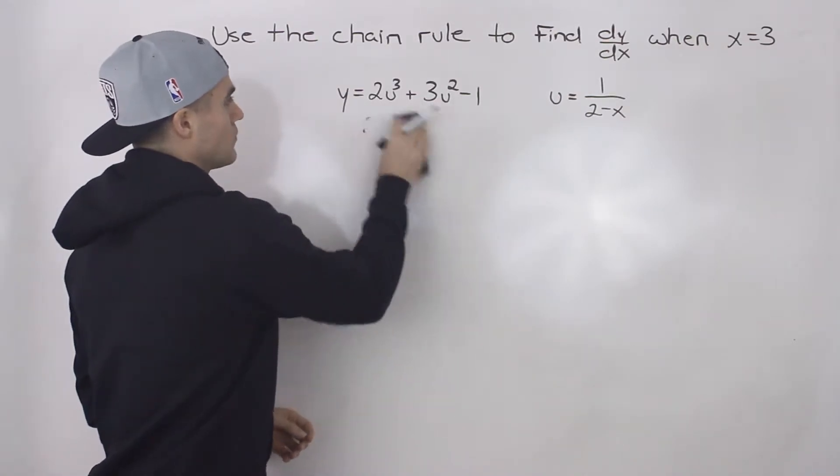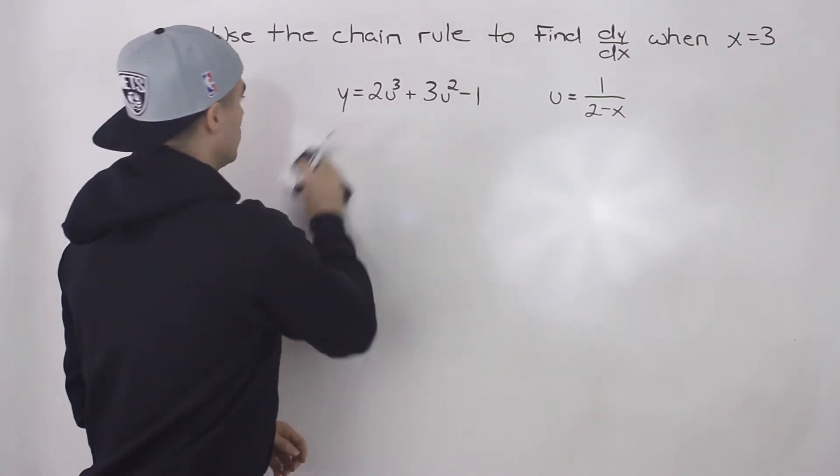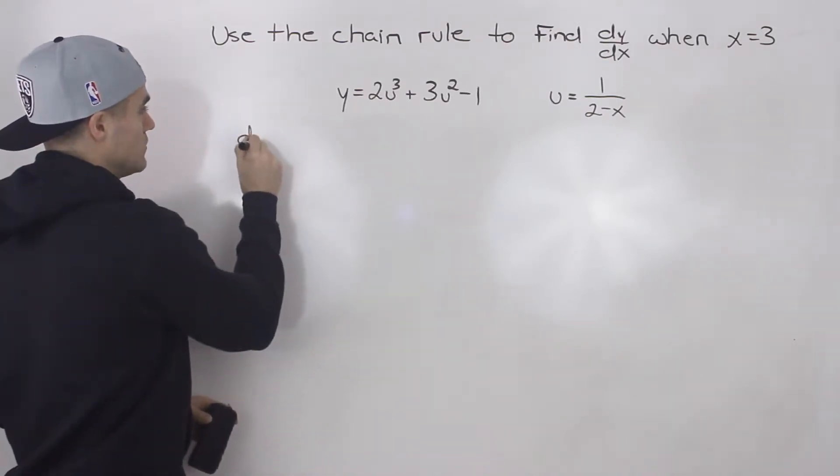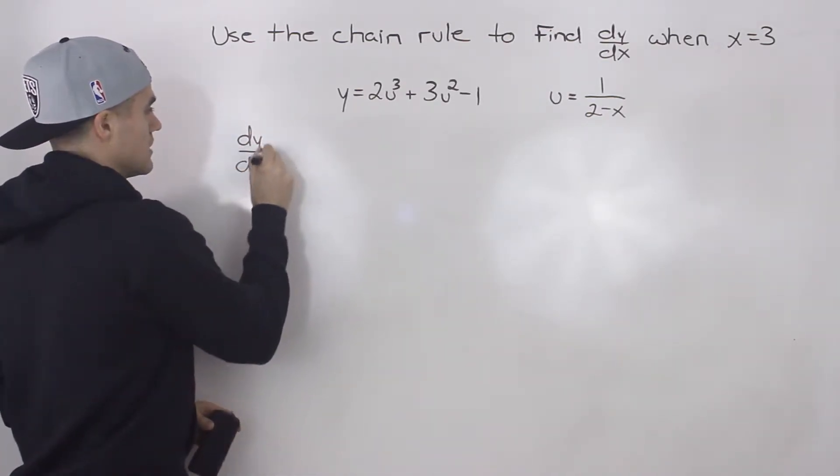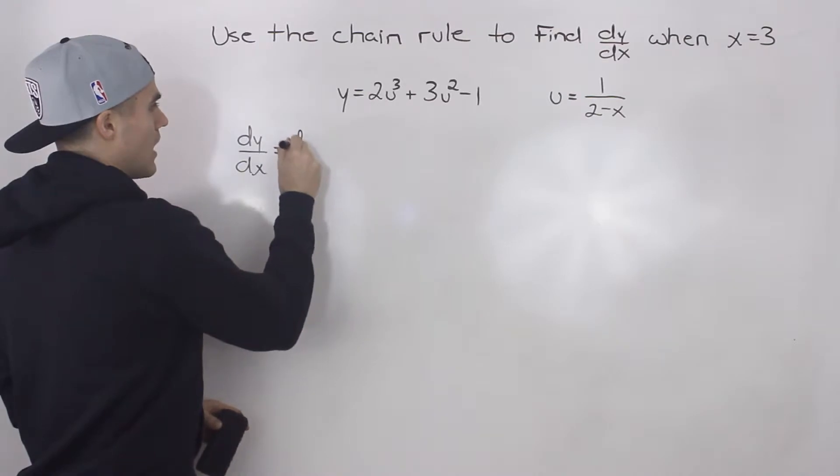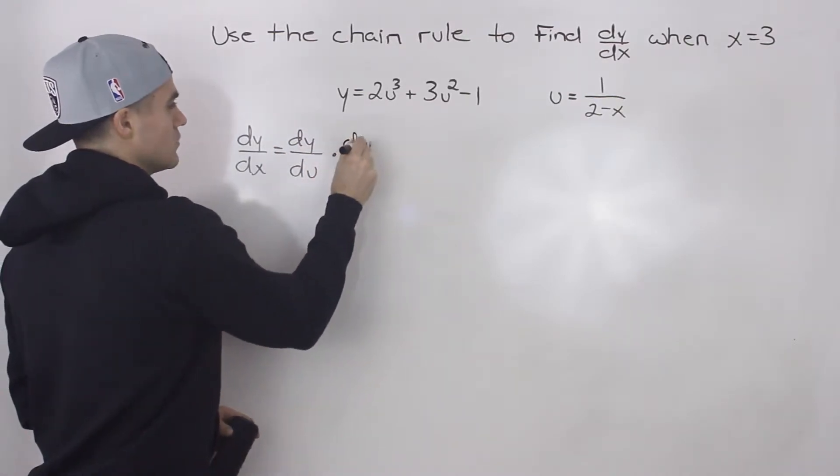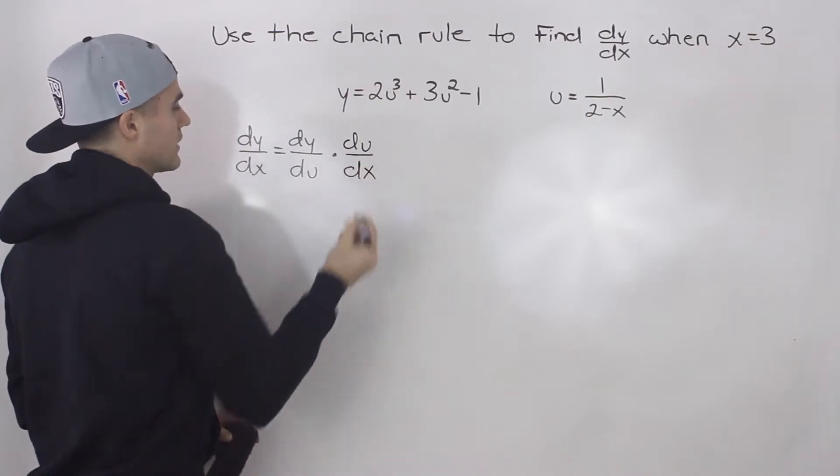However, I would recommend going another route. We can actually use Leibniz notation. So we know that dy/dx would equal dy/du times du/dx. We went over this in the lecture videos.